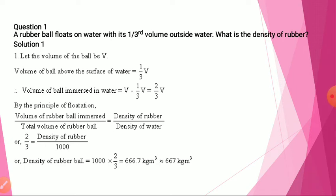Let us consider the volume of the ball as capital V. The volume of the ball above the surface of water is one-third V. The volume of the part immersed in water will be total minus this, so that will be two-thirds V. Now we know that the principle of flotation is: volume of rubber ball immersed upon total volume of rubber ball equals density of rubber upon density of water.